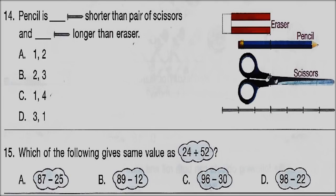Question 14: The pencil is how many units shorter than the pair of scissors and how many units longer than the eraser. Look at the figure — the lengths of the scissor, pencil, and eraser are given. Identify how many units shorter the pencil is than the scissors and how many units longer than the eraser.